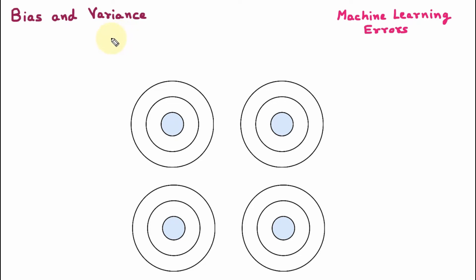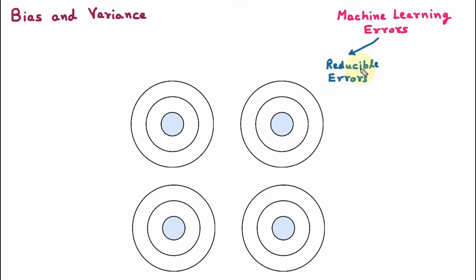Hello everyone, my name is Ankit Verma and today we are learning bias and variance. In machine learning, there are two types of errors. The first is reducible errors and the second one is irreducible errors.